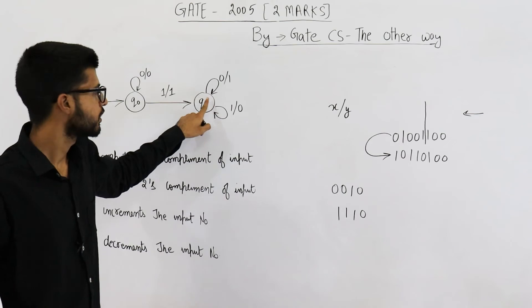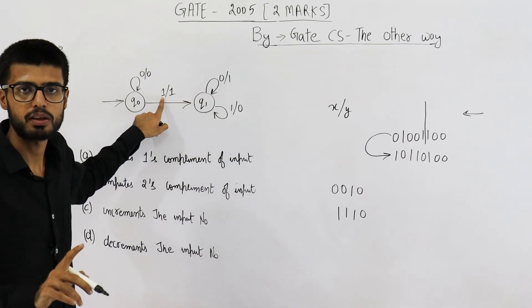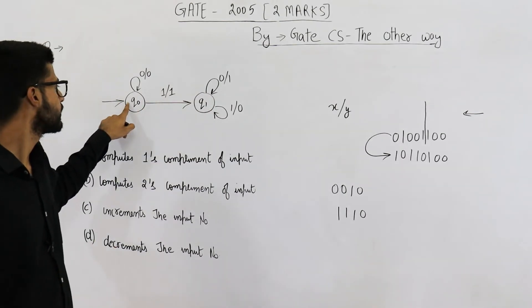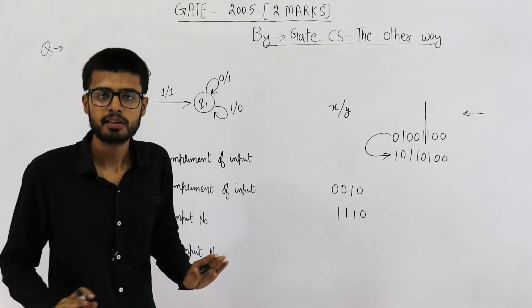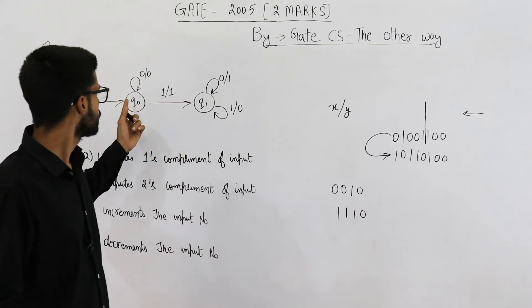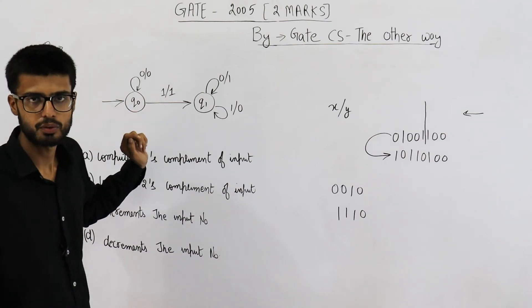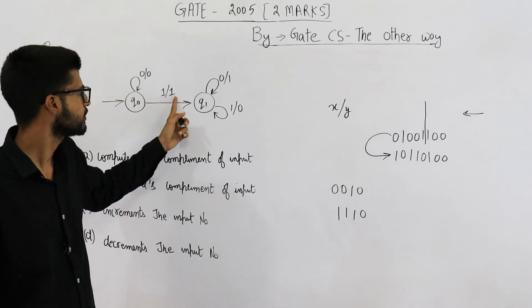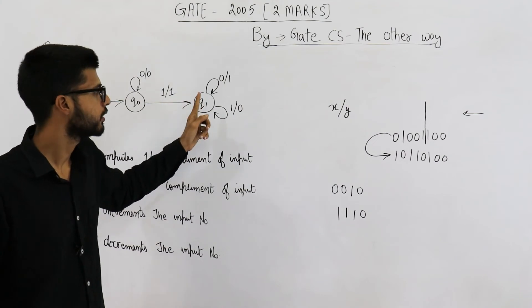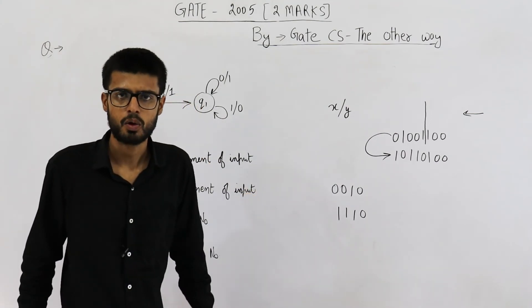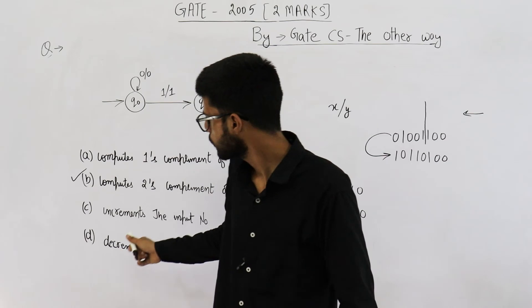This state represents, we have seen the first 1. We have encountered a 1. This state says, we haven't yet encountered any 1. So all the bits will be copied as it is, until you see a 1. 1 will also be copied as it is. After encountering this 1, the bits will start getting complemented. So answer is option B.